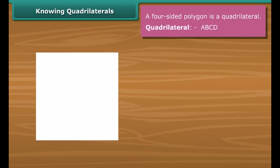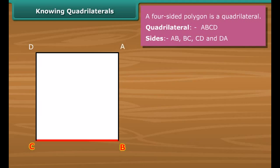The page of a book is called a quadrilateral. It has four sides, four vertices, and four angles. In quadrilateral ABCD, four sides are AB, BC, CD, and DA.